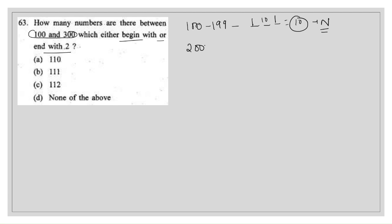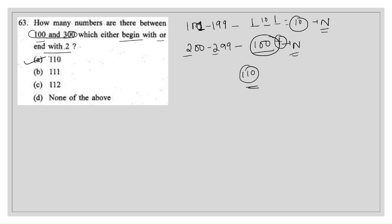From 200 to 299, all 100 numbers start with 2, and since the condition is 'either begin with or end with 2,' all 100 are counted. Adding the ranges: 10 (from 100–199) + 100 (from 200–299) = 110. So the answer for this question is 110.